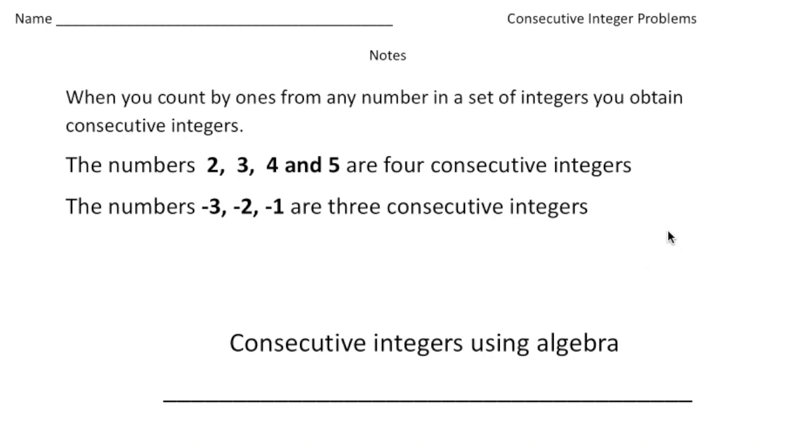So right now I want you to think about the word consecutive. What does it mean? Well, when you count by ones from any number in a set of integers, you obtain consecutive integers. So for example, the numbers 2, 3, 4, and 5 are all consecutive integers. If I want to keep going, it would be 6, 7, 8, 9, 10, and forever. So the big thing about consecutive is that the numbers increase by 1 every time. So 3 plus 1 gives us 4, 4 plus 1 gives us 5. And the same thing is true for negatives.